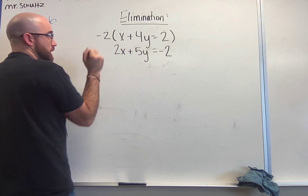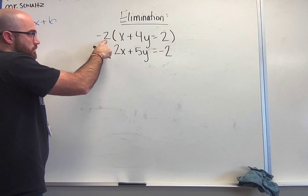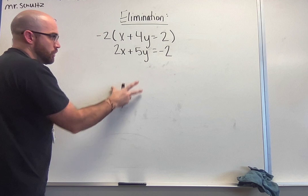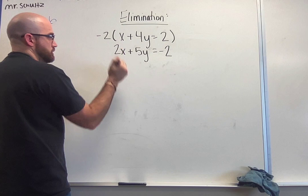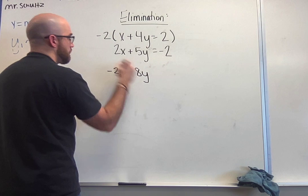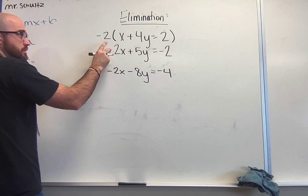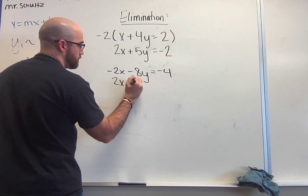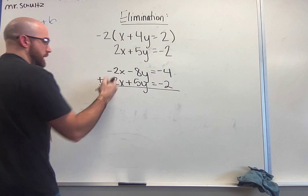So what I'm going to do is multiply this entire top problem times a negative 2. The reason I'm doing this is to make it so my variable here, x, has the same number, 2, but opposite signs. Negative 2 here, positive 2 down here. So I'll rewrite the whole problem. The top part now, I'm distributing negative 2 to everything. Negative 2 times x gets me -2x, negative 2 times 4 gets me -8y, negative 2 times the 2 gets me -4. This second problem I didn't do anything to, so I'm just going to rewrite that: 2x + 5y = -2.